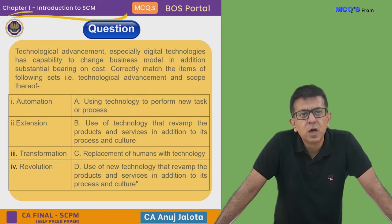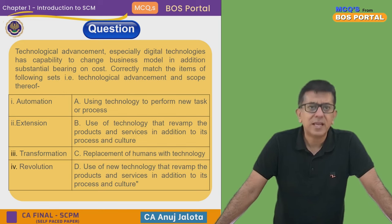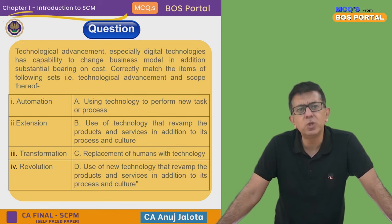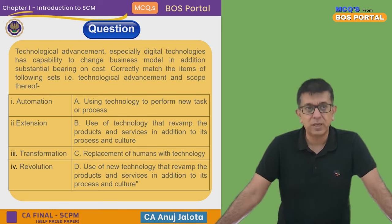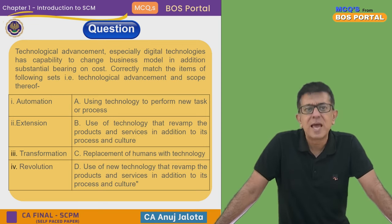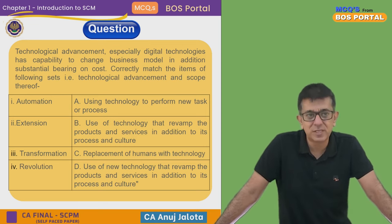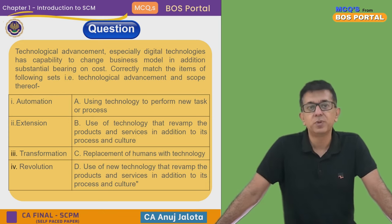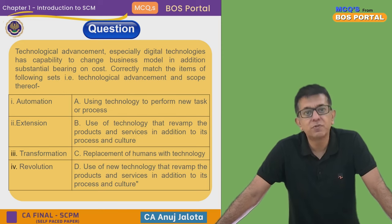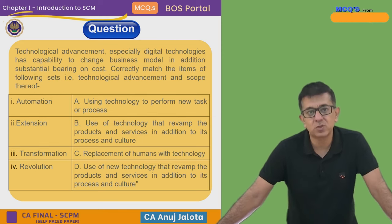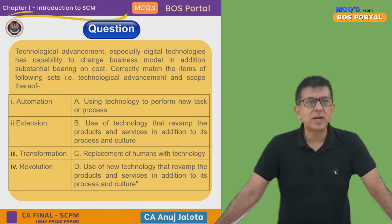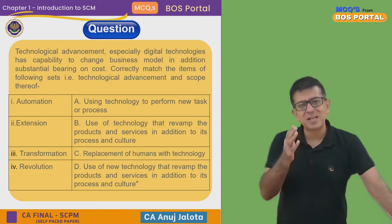On the right side: A — using technology to perform new tasks or processes; B — extension, use of technology that revamps the products and services in addition to processes and culture. Now let's try to see what these four terms mean. Matching the following is going to be quite an easy process. This description will help you remember what each term means.